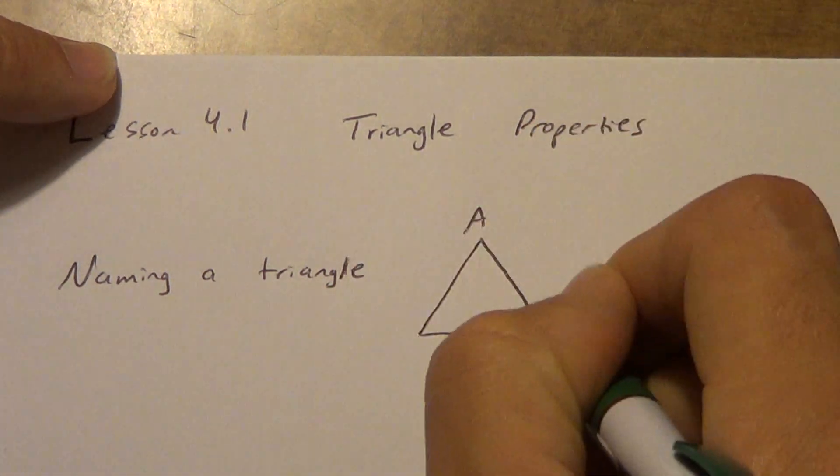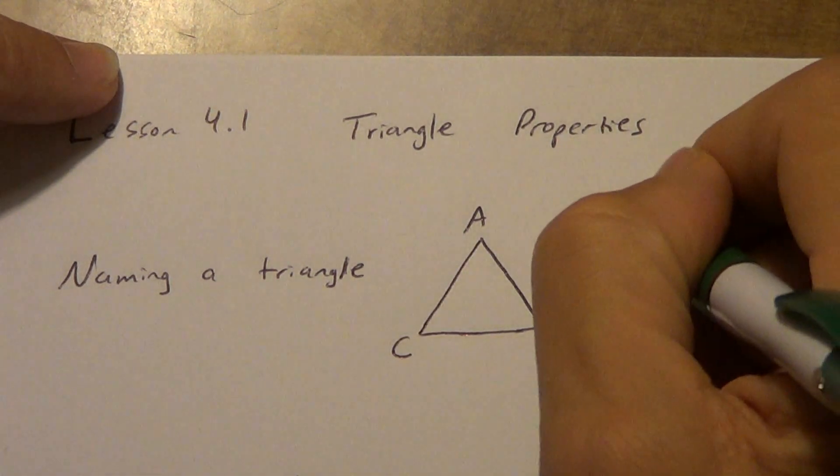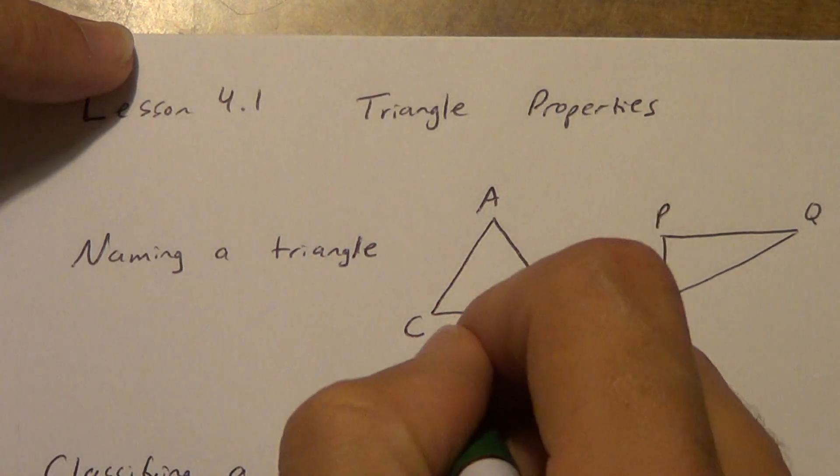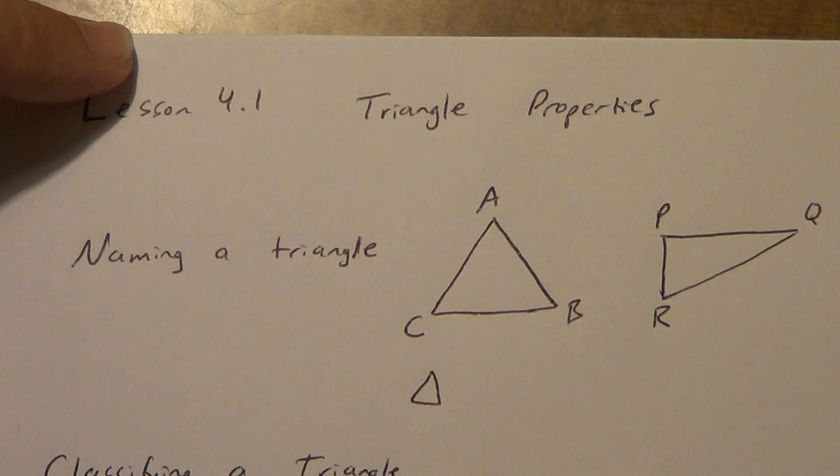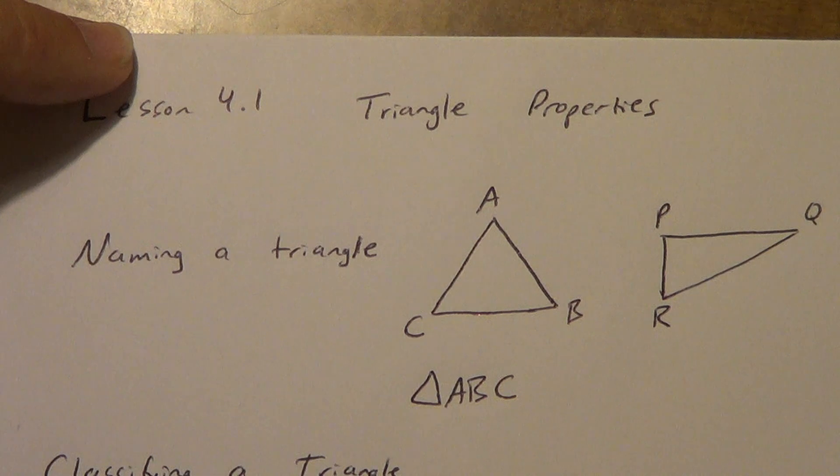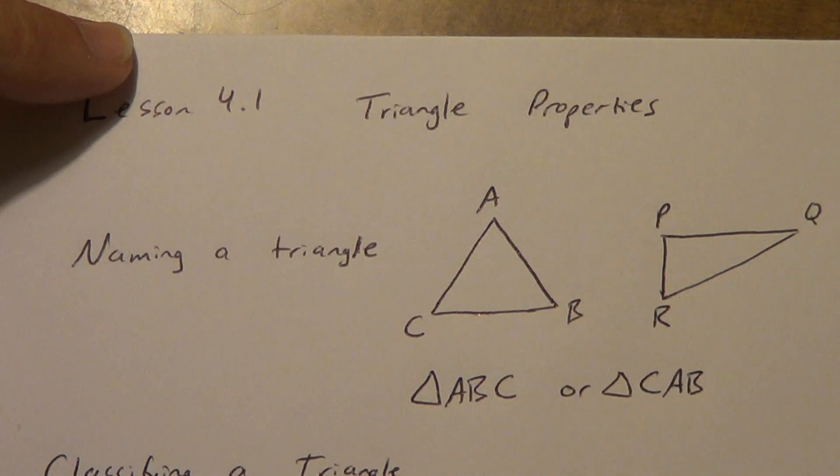So let's say I have three letters here, capital letters because they're points, or maybe over in this one I have these three letters. Okay, to name a triangle, you use the triangle symbol, which just looks like that. And then you write your three letters and you can write them in any order. So I could call this triangle ABC.